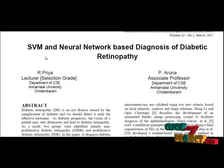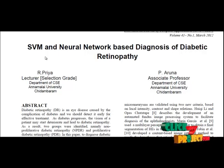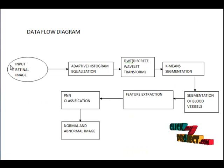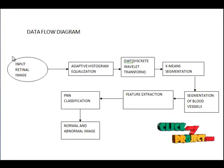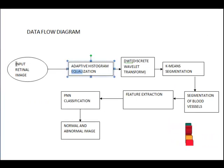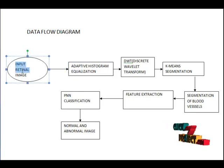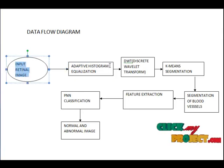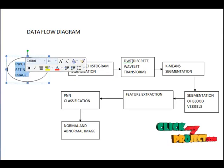Finally, fuzzy c-means clustering is applied to segment the blood vessels in the images. Here, we are providing a new method in diabetic retinopathy disease, which causes vision loss rapidly. First, we will load the input retinal images. The next step is adaptive histogram equalization.